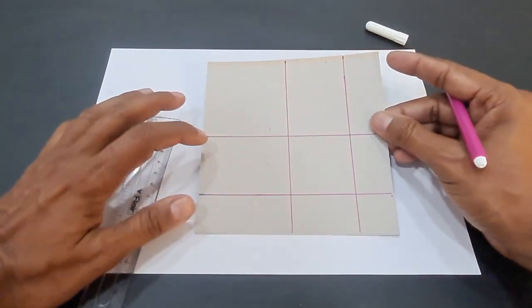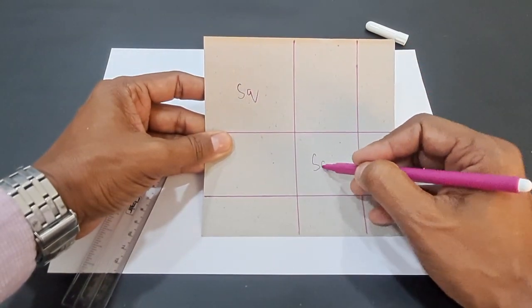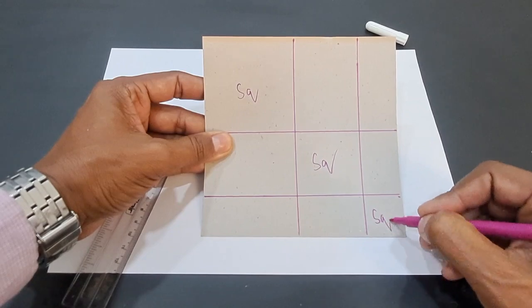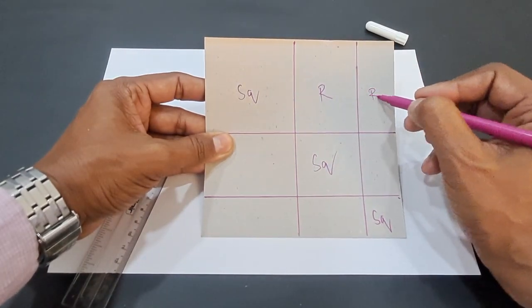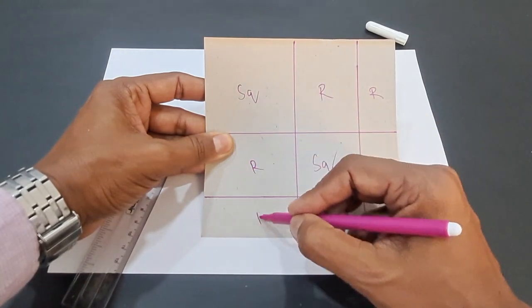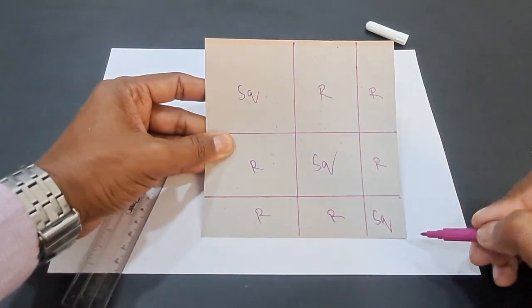You will observe that this part is actually a square, this is also a square, and this is also a square, but the other parts are all rectangles. So you will obtain 6 rectangles and 3 squares.